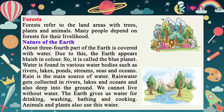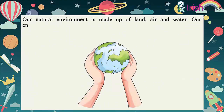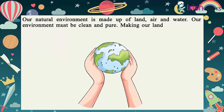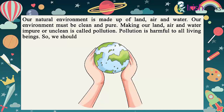Our natural environment is made up of land, air and water. Our environment must be clean and pure. Making our land, air and water impure or unclean is called pollution. Pollution is harmful to all living beings, so we should not pollute our earth. We should keep it clean.